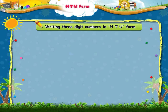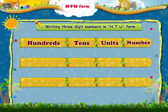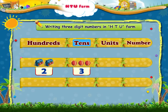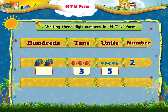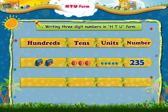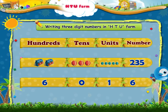Now let us learn to write such three-digit numbers given in the H-T-U form. Look at the first example. There are two bags in the hundreds place, three balls in the tens place and five dots in the units place. So the number is written as two, three, five. Look at the next example. There are six in the hundreds place, zero in the tens place and one in the units place. So we write the number as six, zero, one.